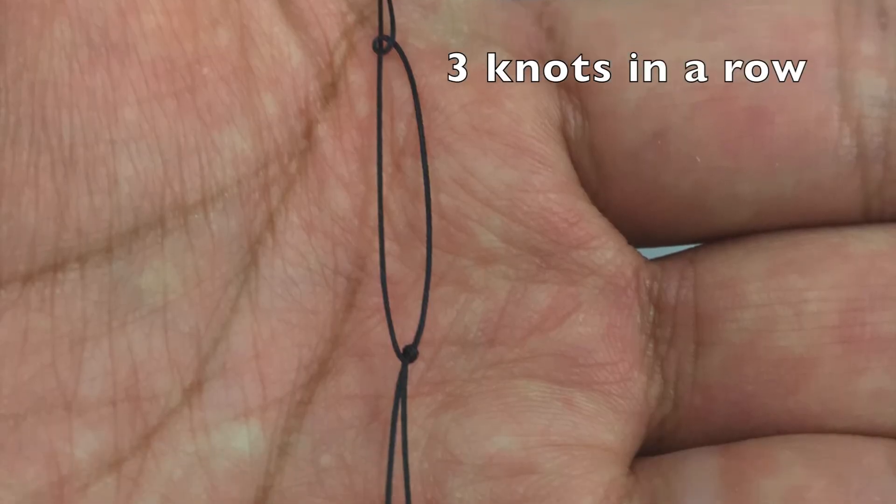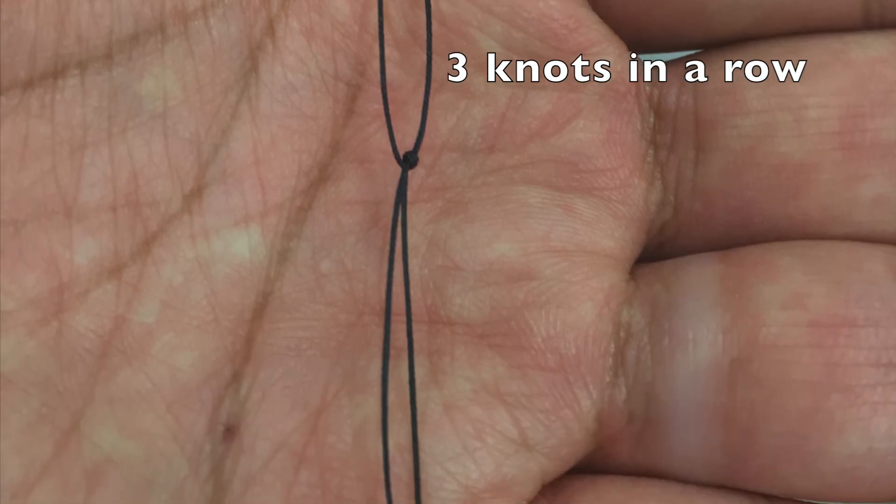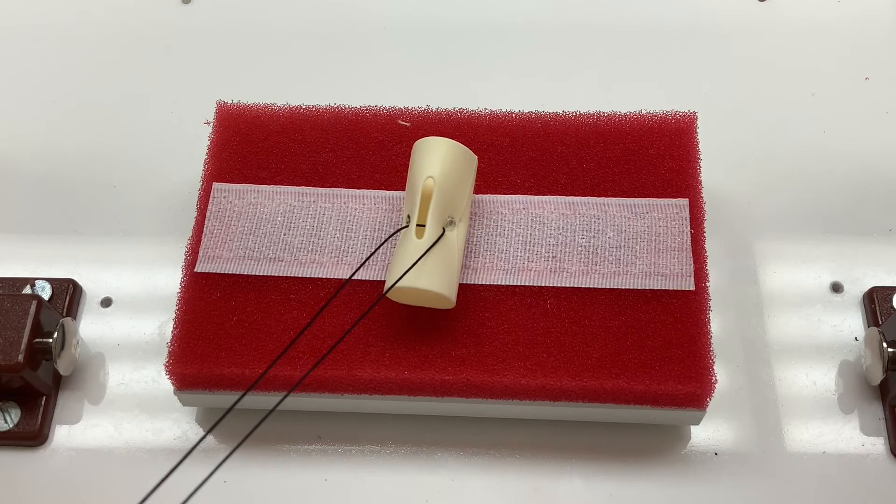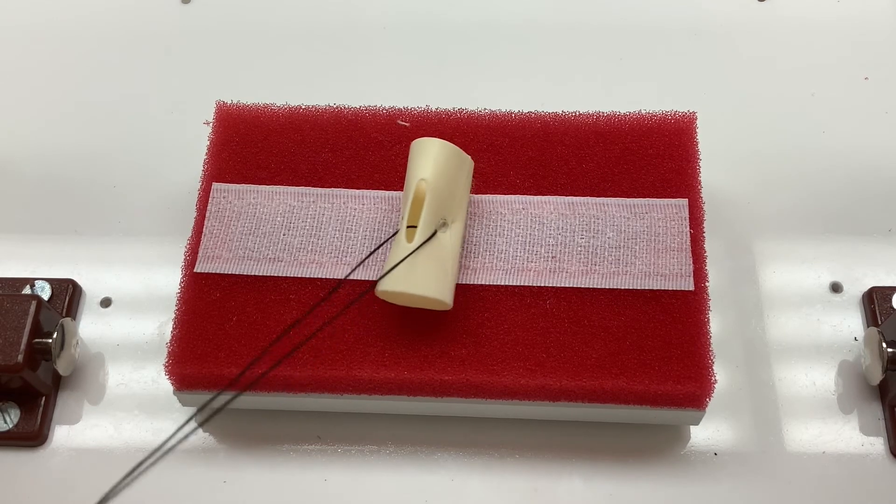We tie 3 square knots in a row as shown. This allows the examinee to rapidly push down the knots in succession.